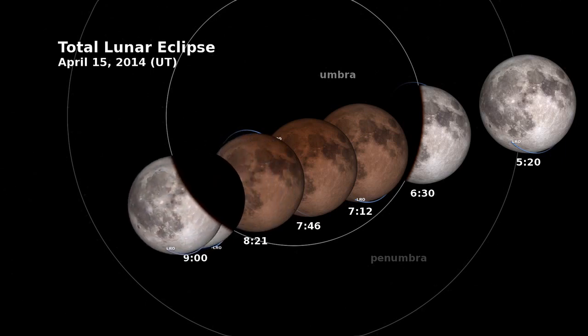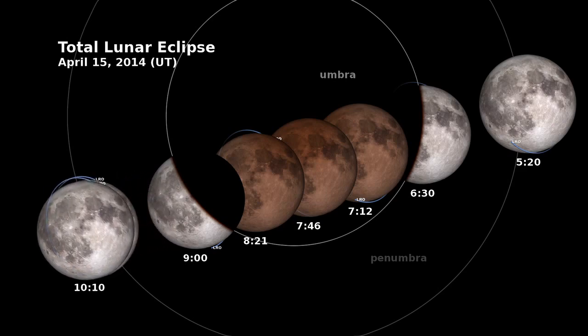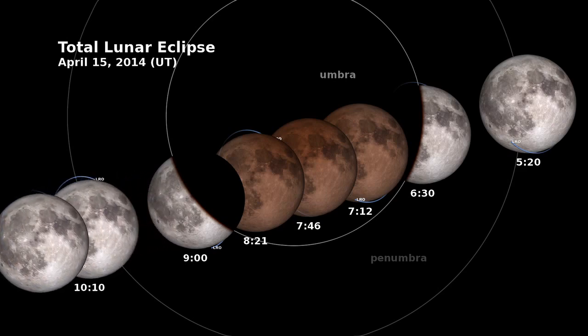When the moon comes out of the Earth's umbra, it begins to look, as we've always seen it, this beautiful bright gray orb in the sky.